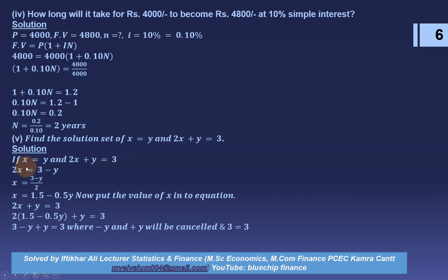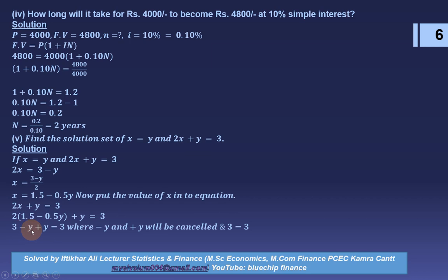Question 5: find the solution set of x = y and 2x + y = 3. If x = y, then 2x + y = 3 gives 2x = 3 − y, so x = (3 − y)/2 = 1.5 − 0.5y. Substituting x into 2x + y = 3: 2(1.5 − 0.5y) + y = 3, which gives 3 − y + y = 3. The minus y and plus y cancel, confirming 3 = 3.